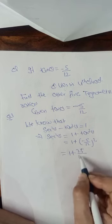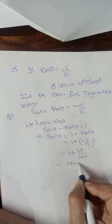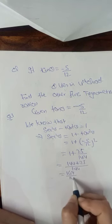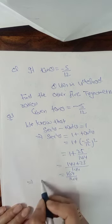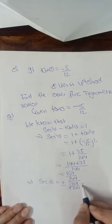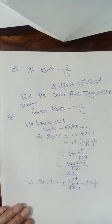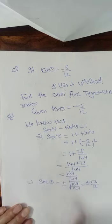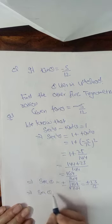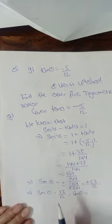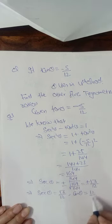So sec²θ = 169/144, which implies sec θ = ±√(169/144) = ±13/12. Now θ lies in the fourth quadrant, and in the fourth quadrant both cos and sec are positive. Therefore sec θ = 13/12, and cos θ, being the reciprocal of sec θ, will be 12/13.